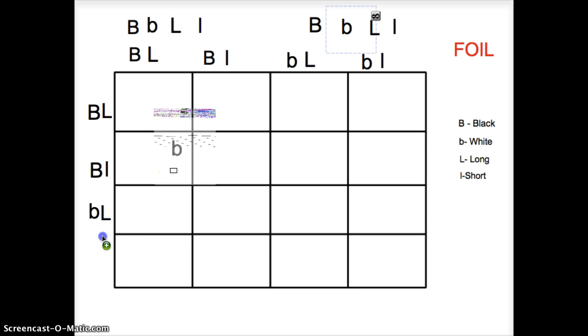And then L for last, little b, little l. So setting up, I think, is probably the hardest part. Once you have it set up, then it's pretty much just like a normal Punnett square. And instead of two letters, you're going to have four letters in each square.